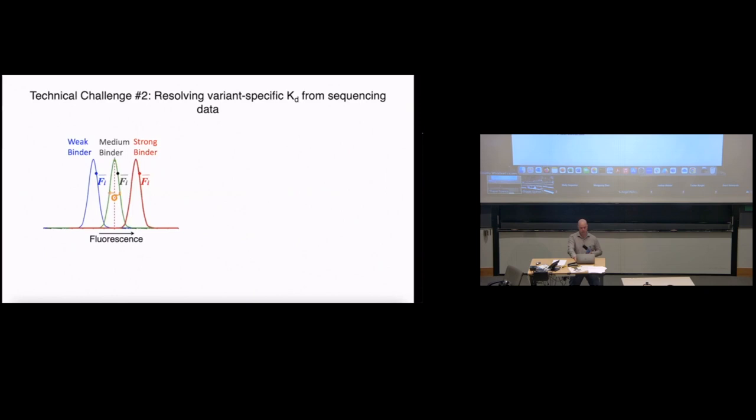The harder technical challenge is actually resolving variant-specific KD from sequencing data. I always tell my students that Stephen Hawking famously said each equation you add to the book halves the readership. So I'm going to try to do this without equations. When you perform flow cytometry, what you're getting out is fluorescence. For a given variant, if you have yeast and they all express the same clone, there's a distribution of fluorescent values with that binding channel. It turns out that distribution is log normally distributed.